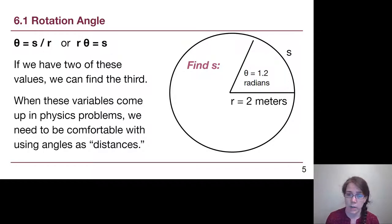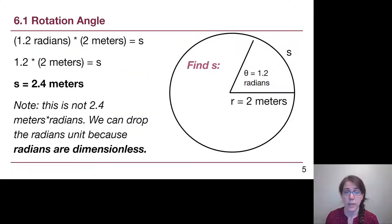Pause the video if you can, and try this on your own to make sure that you are thinking not just about how to multiply the numbers together, but what the final units are going to look like. So 1.2 radians times 2 meters, as soon as there are other units attached to it, the radians go poof out of existence. We get 2.4 meters.